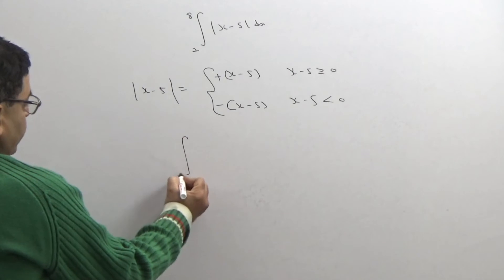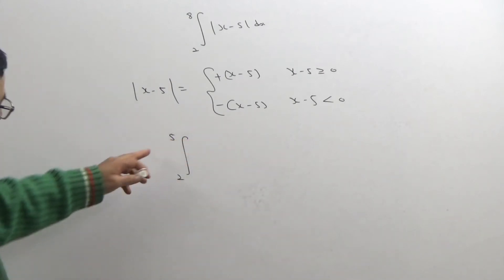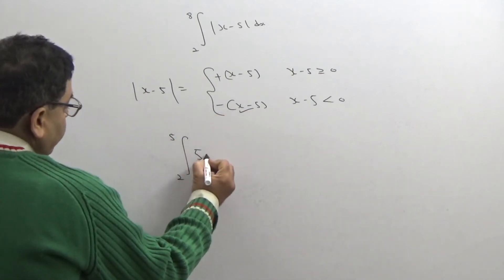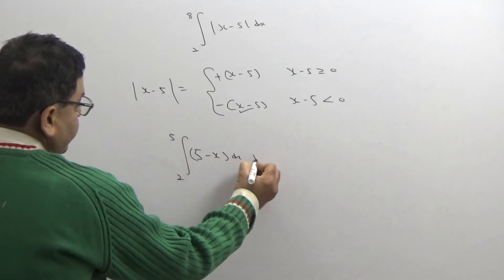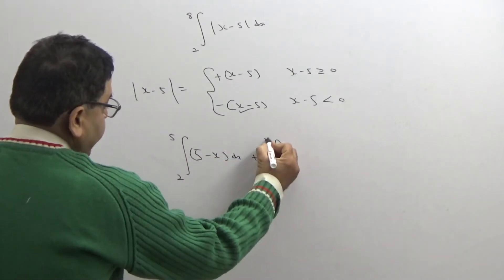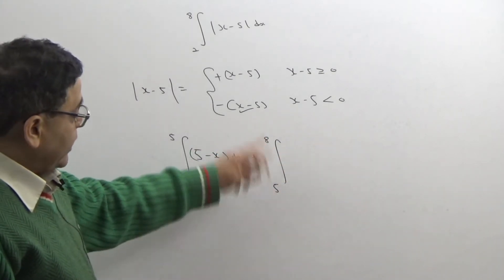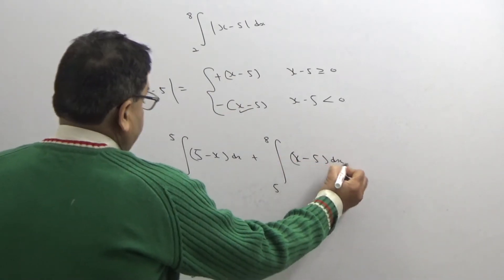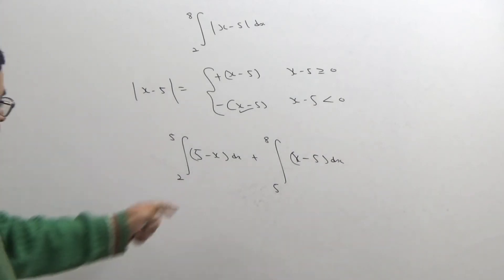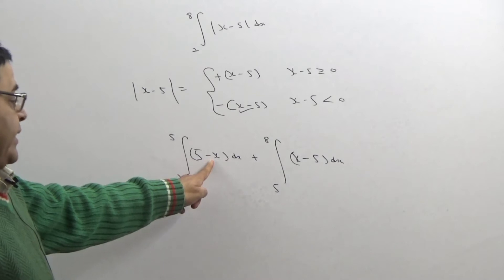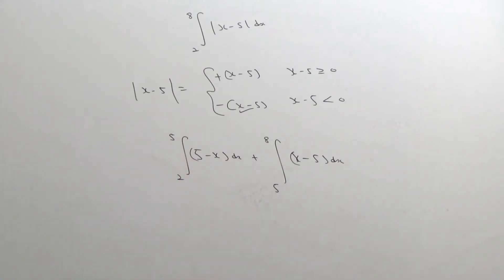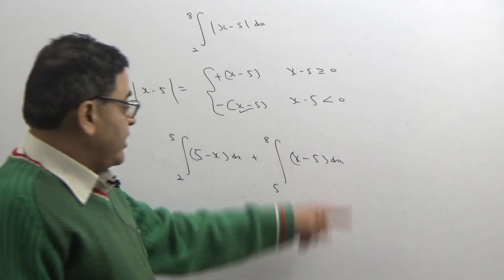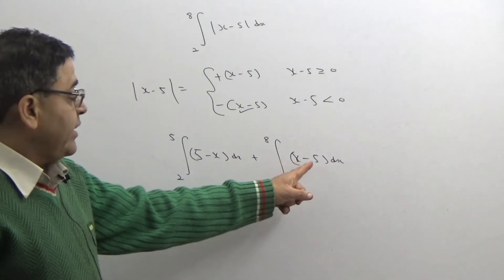So now we split the integral: from 2 to 5 the function is less than 5, so we use (5−x) dx. After that, from 5 to 8 the function is greater than 5, so we use (x−5). The lower limit is 2, upper limit is 5 for the first part. This is a linear equation — the first line makes an obtuse angle with the x-axis, while the second line's coefficient of x is positive so it makes an acute angle.